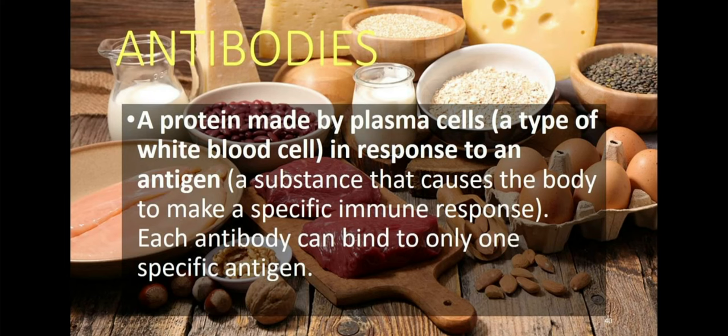Our last topic: antibodies. An antibody is a protein made by plasma cells — a type of white blood cell — in response to an antigen. An antigen is a substance that causes the body to make a specific immune response. Each antibody can bind to only one specific antigen. Our antibodies are mainly composed of IgM, IgG, IgA, IgE, and IgD.